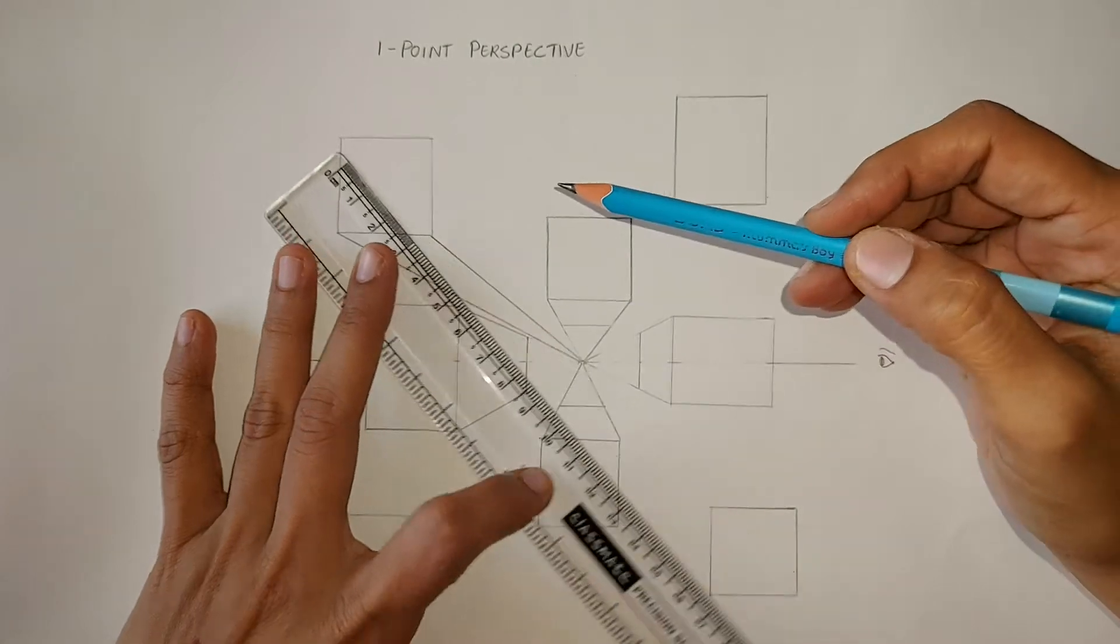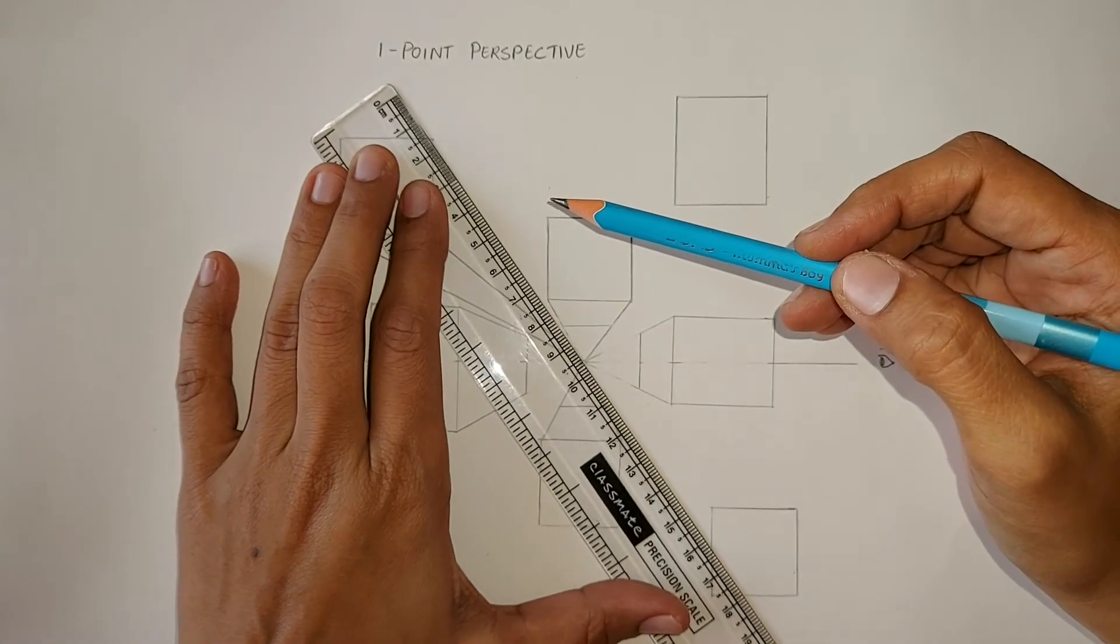The fourth corner need not be connected as that line will be hidden behind this cube.